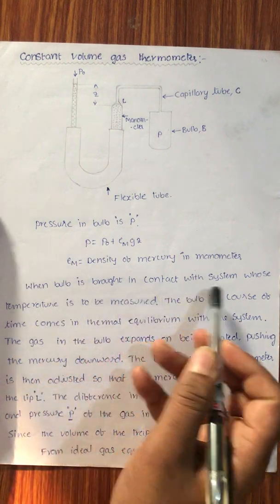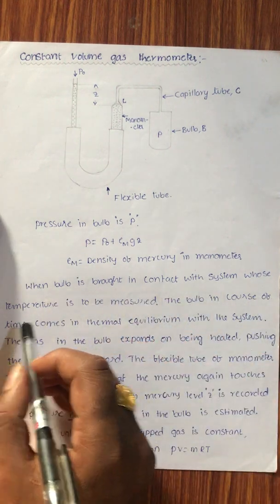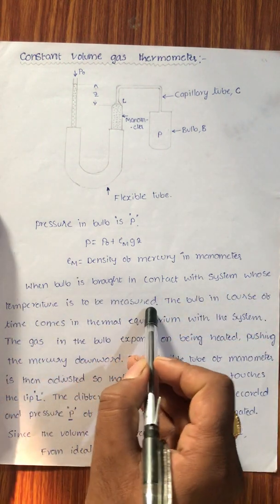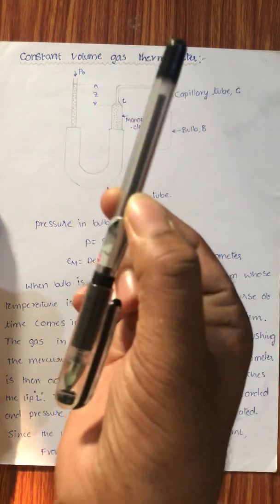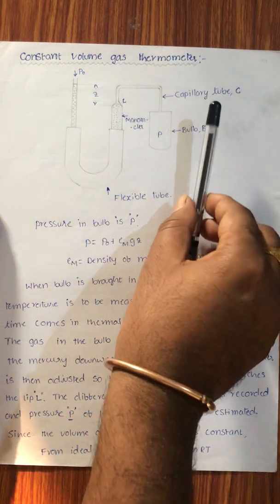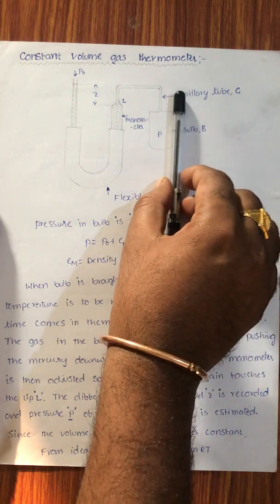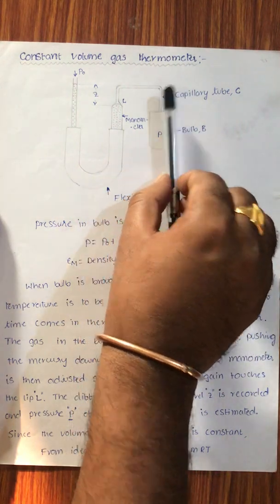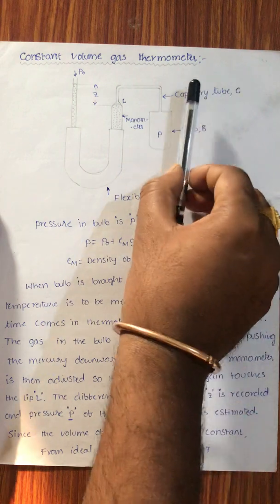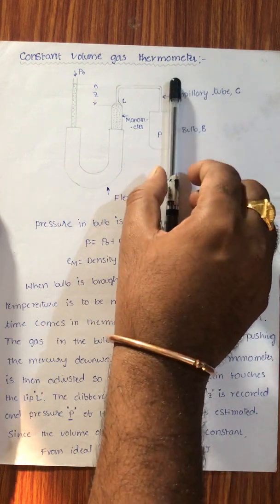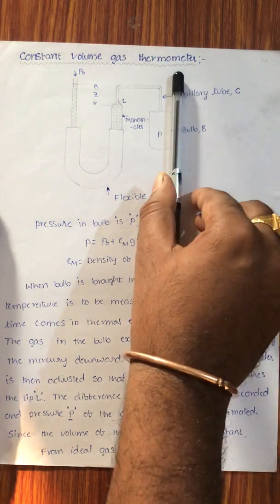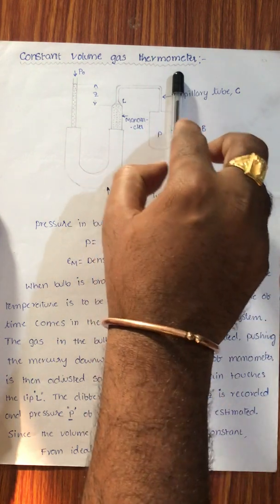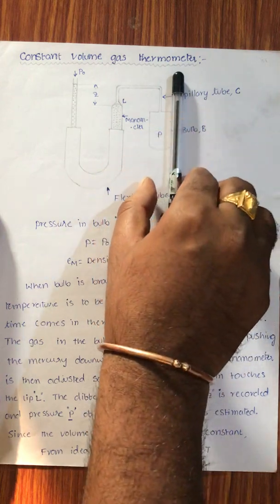When the bulb is brought in contact with the system whose temperature is to be measured — for example, if I consider this as a system, I want to make physical contact between the system and the bulb, because I want to measure the temperature of this system.